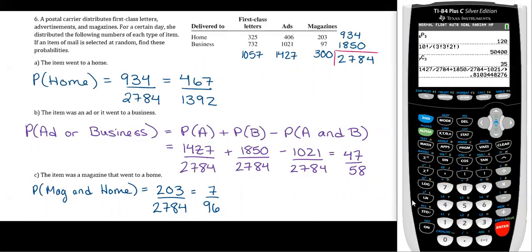Okay, so when you press enter on that you get a decimal. Now let's say that ConnectMath says that it needs to be a reduced fraction. So what you can do...